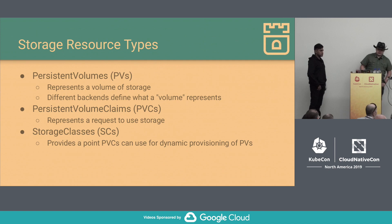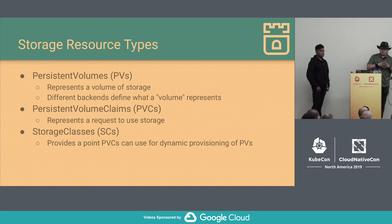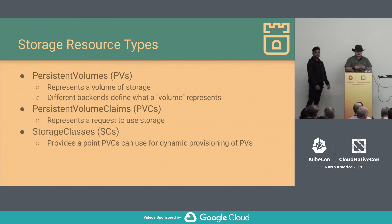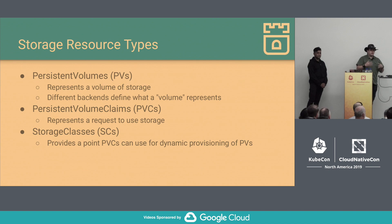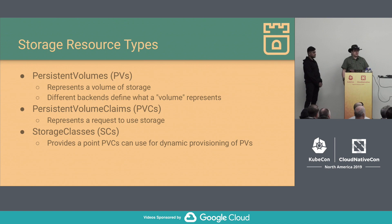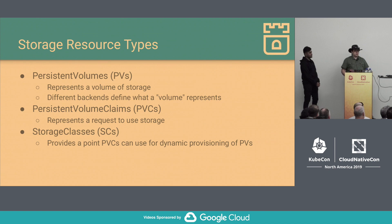To set the stage — storage in Kubernetes. Your basic workflow with storage involves persistent volumes or PVs, persistent volume claims or PVCs, and storage classes or SCs. The persistent volume represents a volume of storage in a storage subsystem somewhere. Different storage backends define what a volume represents, but applications running in Kubernetes don't entirely care what's running underneath. Applications don't interact directly with PVs — they interact with PVCs, which represent a request to use a piece of storage available in Kubernetes. PVs are non-namespaced, so they're cluster-wide, but PVCs are namespaced.